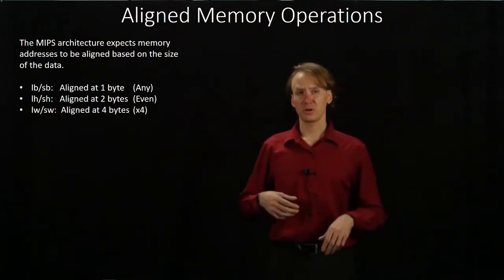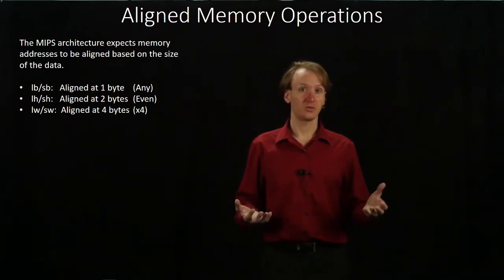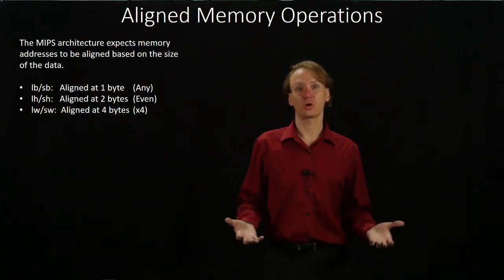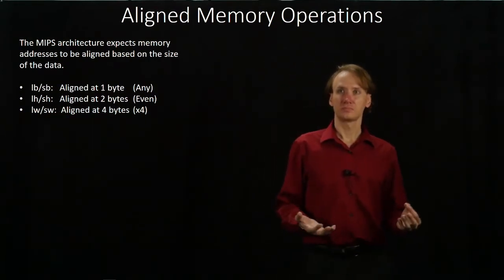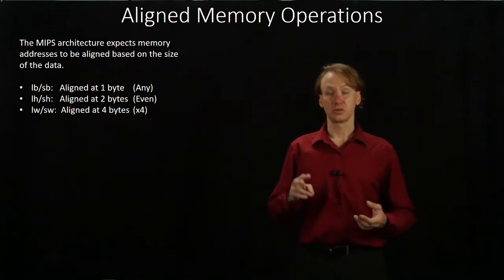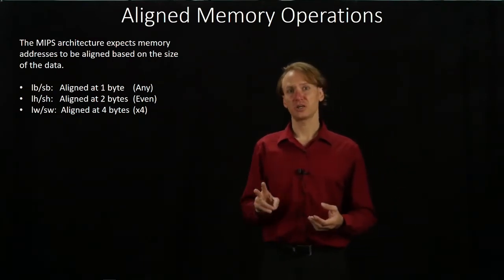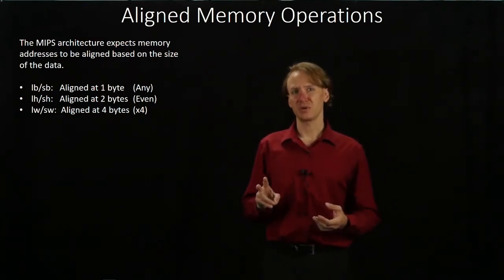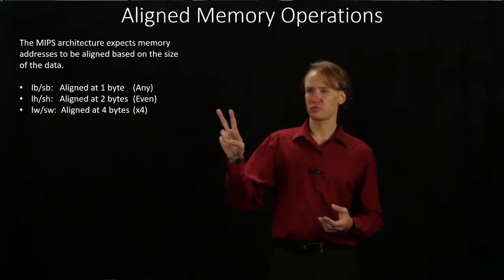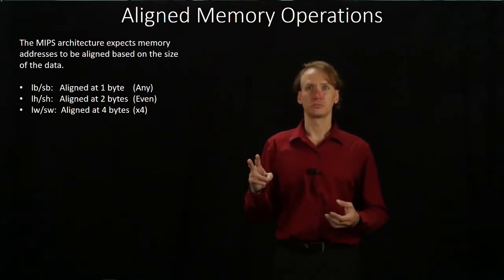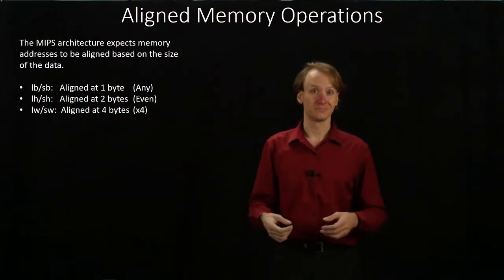But if we're going to be working with half words or full words, then we will have to worry about alignment. With halves — those are two bytes — the MIPS architecture expects that you will give it an address that is aligned to a multiple of two, which is essentially any even number.